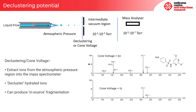One other parameter worth mentioning is the declustering potential, or cone voltage, which is applied to the front of the mass spectrometer. This is used to aid in the transfer of ions from the atmospheric pressure part of the source into the intermediate vacuum region. Different manufacturers have different names for this voltage, but the effect is effectively the same. It also helps to break up any clusters of hydrated ions trying to enter the mass spec. While it can increase the response of an analyte, it can also produce in-source fragmentation.